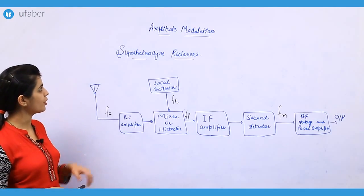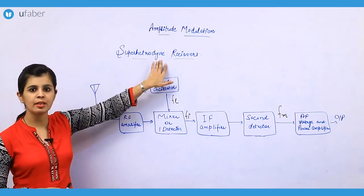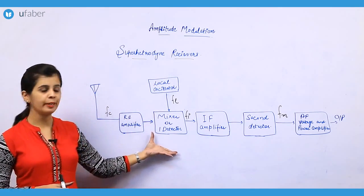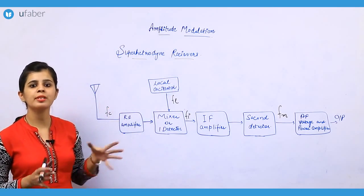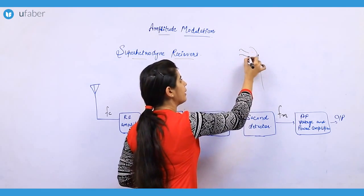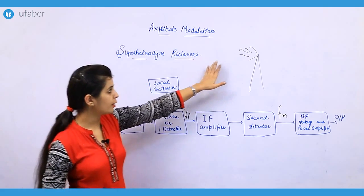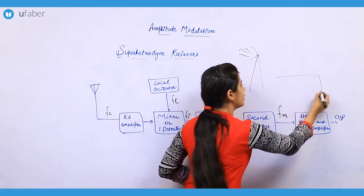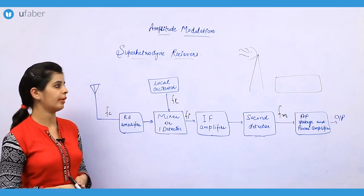The last topic of our discussion in case of amplitude modulation is the super heterodyne receivers. This is a very important topic that you should understand properly. In super heterodyne receivers, there would be one antenna. This antenna is going to receive modulated signals, and then the system is going to demodulate this particular signal at the receiver end.